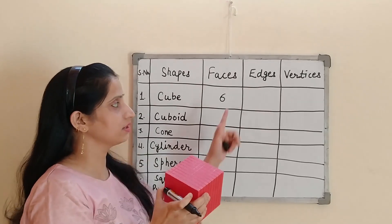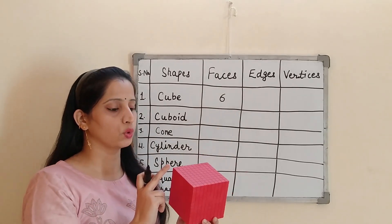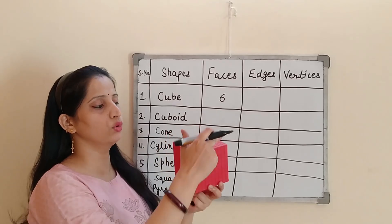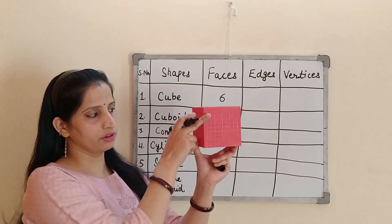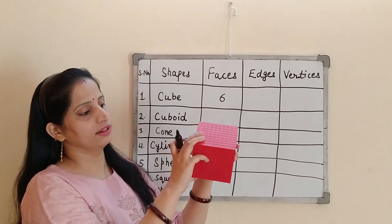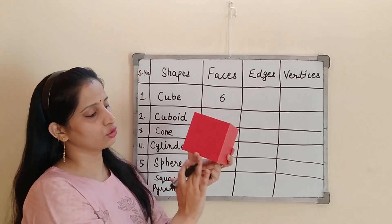Now let's count the edges. Edges means I have already told these line sections. So now let's count 1, 2, 3, 4, 5, 6, 7, 8, 9, 10, 11, and 12.